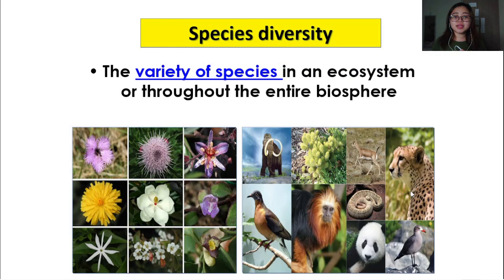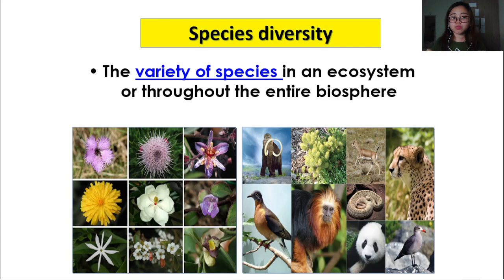Another type of diversity that we talk about is species diversity — ini adalah jenis diversity yang kedua. And this is usually what people think of when we talk about biodiversity, which is the variety of species in an ecosystem or throughout the entire biosphere. Dalam sesuatu kawasan, atau dalam sesuatu ekosistem, ada berapa spesies haiwan, berapa spesies tumbuhan, berapa spesies fungus, dan berapa spesies kuman kita boleh jumpa. So this is the variety of the numbers of species in an ecosystem.